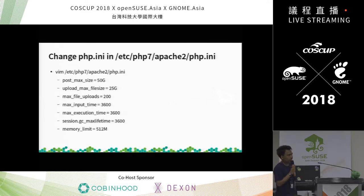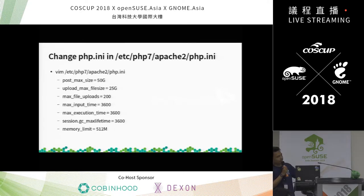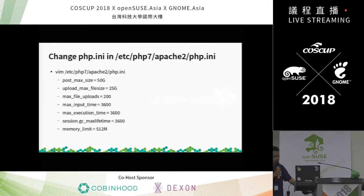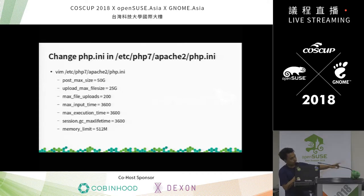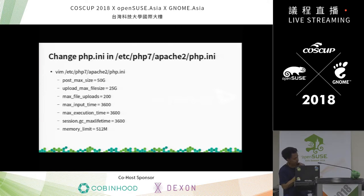This is important. Change PHP.ini located at /etc/php7/apache2/php.ini using the vi command. You need to change: post_max_size, upload_max_filesize, max_file_uploads, max_input_time, max_execution_time, and memory_limit.